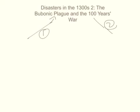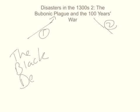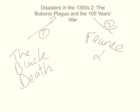The other name for the bubonic plague is the Black Death, or just known as the plague. It's called the Black Death because people's limbs — arms, legs, things like that — turned black and rotted off. Lovely. And the 100 years war took place between France and England.